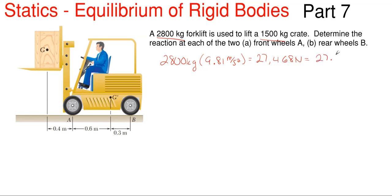For the crate, it's 1500 kilograms times 9.81 meters per second squared, and that will give us a total of 14,715 newtons. Once again, convert that into kilonewtons by dividing by a thousand, so we end up with 14.715 kilonewtons. You could leave these in newtons, but using the smaller numbers is a little bit easier to write out.